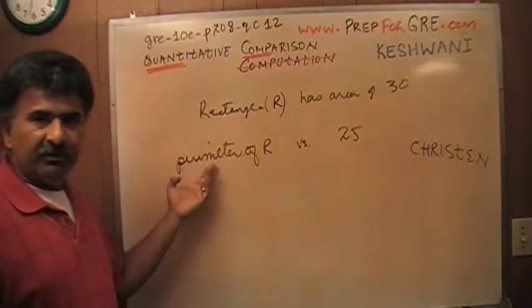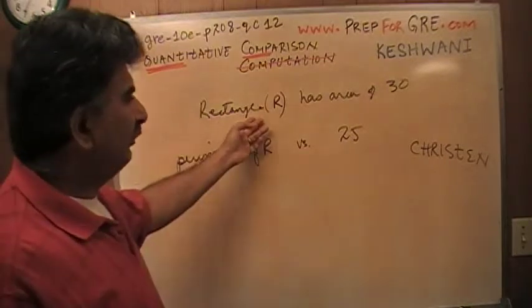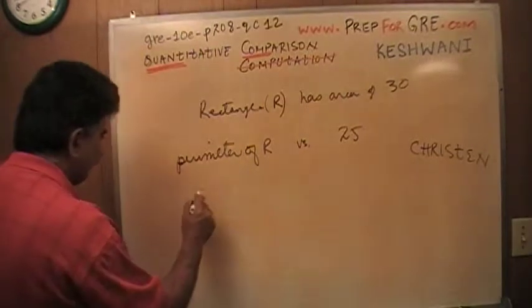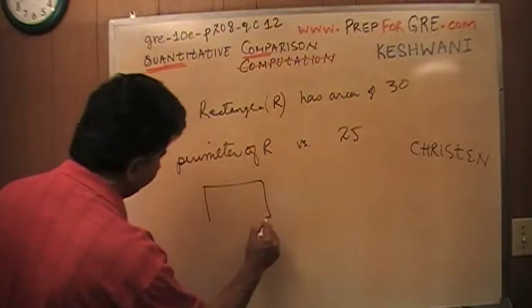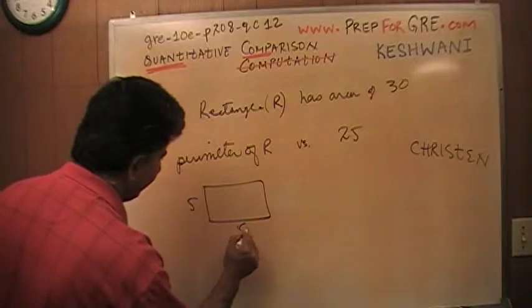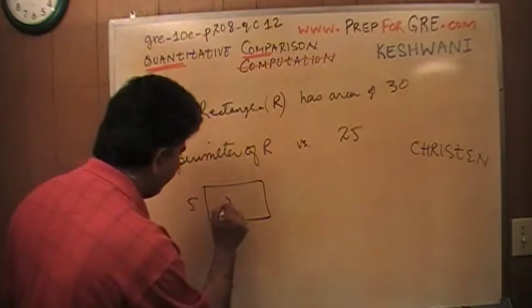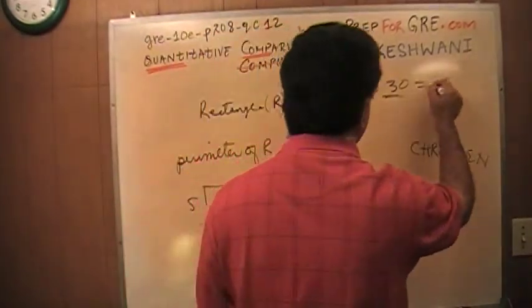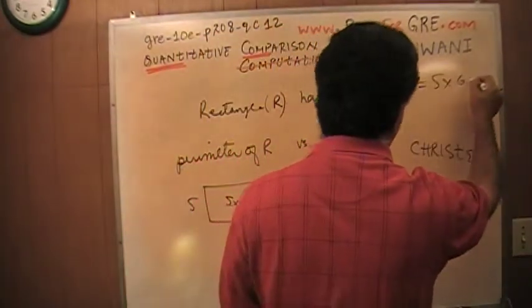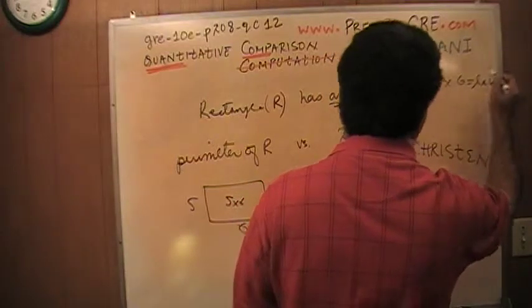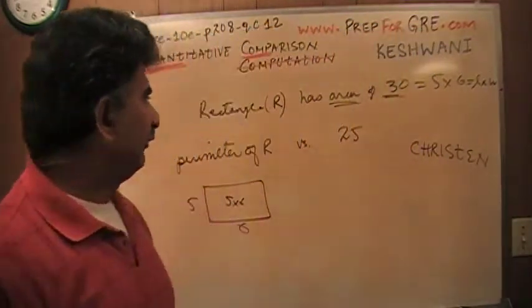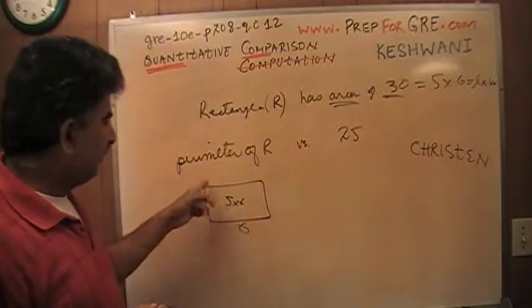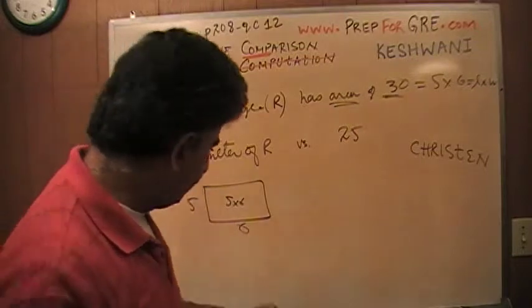First of all, what does perimeter mean? Perimeter means sum of all the sides. So first thing you do is you make up a rectangle with the area of 30. I'm just going to make something simple. How about this? This side is 5 and this side is 6. This has an area of 30, doesn't it? 5 times 6 is 30. That is how you find the area, length times the width. They want me to compare the perimeter of this thing versus 25.